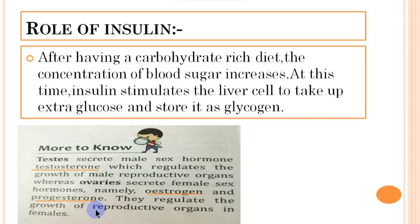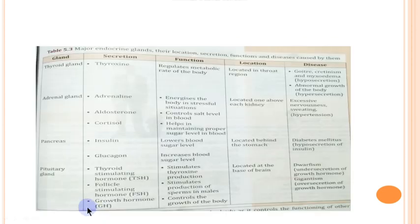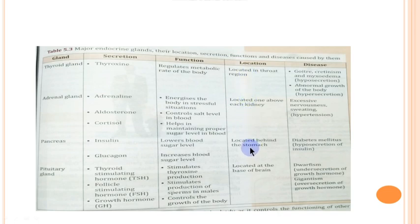This is all about the various hormones secreted from the various endocrine glands. Look at the table — we have already discussed the various glands, their secretions, and their functions along with their locations. In the next video, we will discuss the diseases associated with the endocrine glands. Till then, stay tuned. Goodbye.